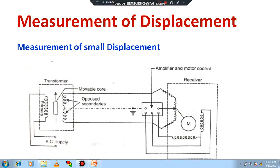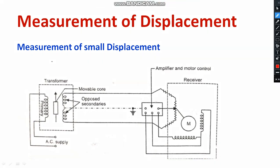Let me familiarize you with this particular diagram. We have an AC supply input — it may be single-phase 230 volt, 50 hertz AC supply. That is the primary winding of the transformer, and you can see the secondary winding of the transformer. These are two coils connected in an opposite manner. There is also a movable core.